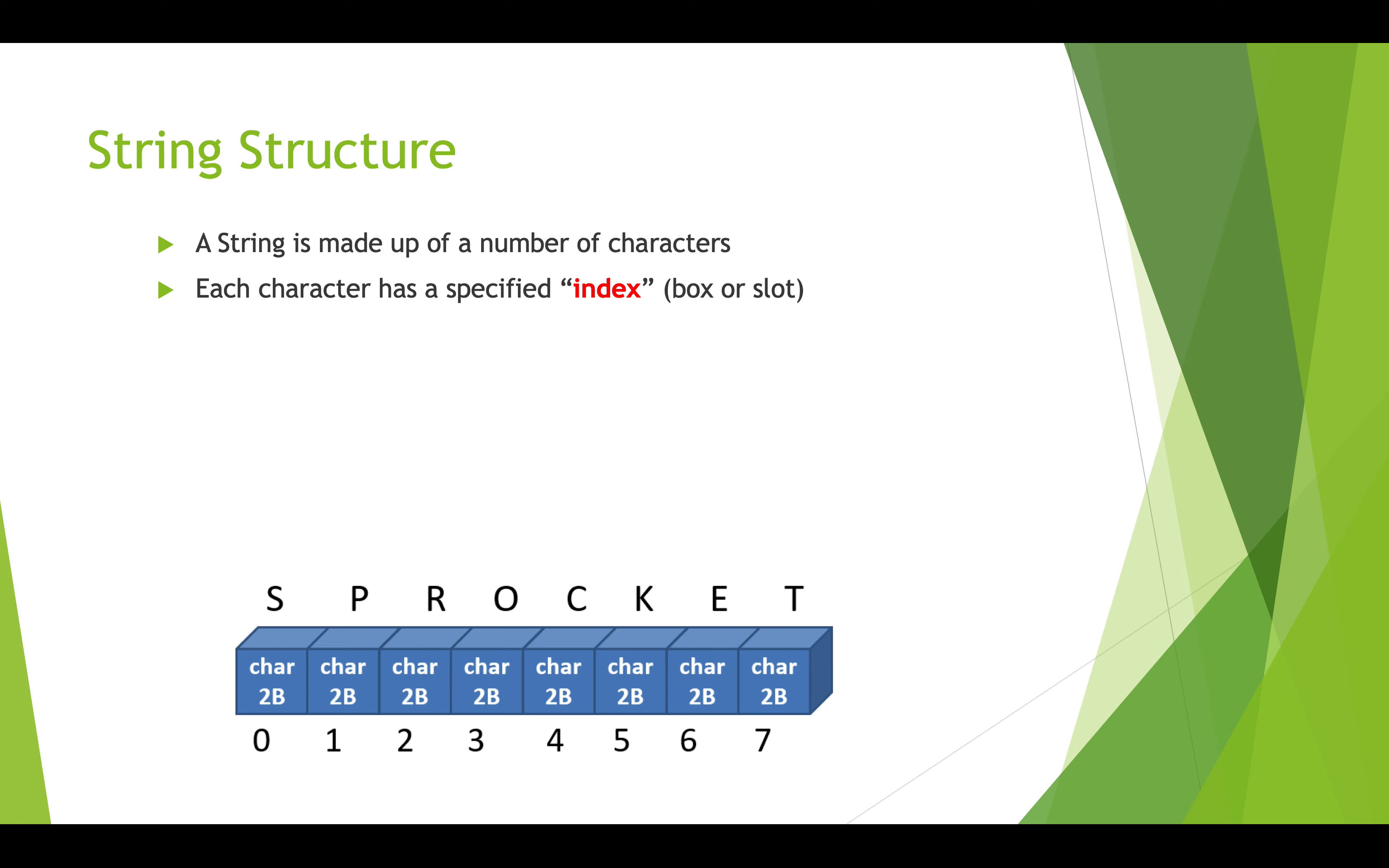We need to understand the structure of how strings are stored and made up. A string is made up of a number of characters and you can think of them as being lined up in a box that has a bunch of different slots in it. Each character has an index to allow us to get into the right slot in the box to get it. If we look at this diagram below, we have the string sprocket, which has eight characters in it, and it's got indices from 0 to 7. The first letter in sprocket, S, has an index of 0. The second letter, P, has an index of 1. These slots all just hold a single character. They're two-byte slots. Strings can have many slots or just a few slots, depending on how many are needed.